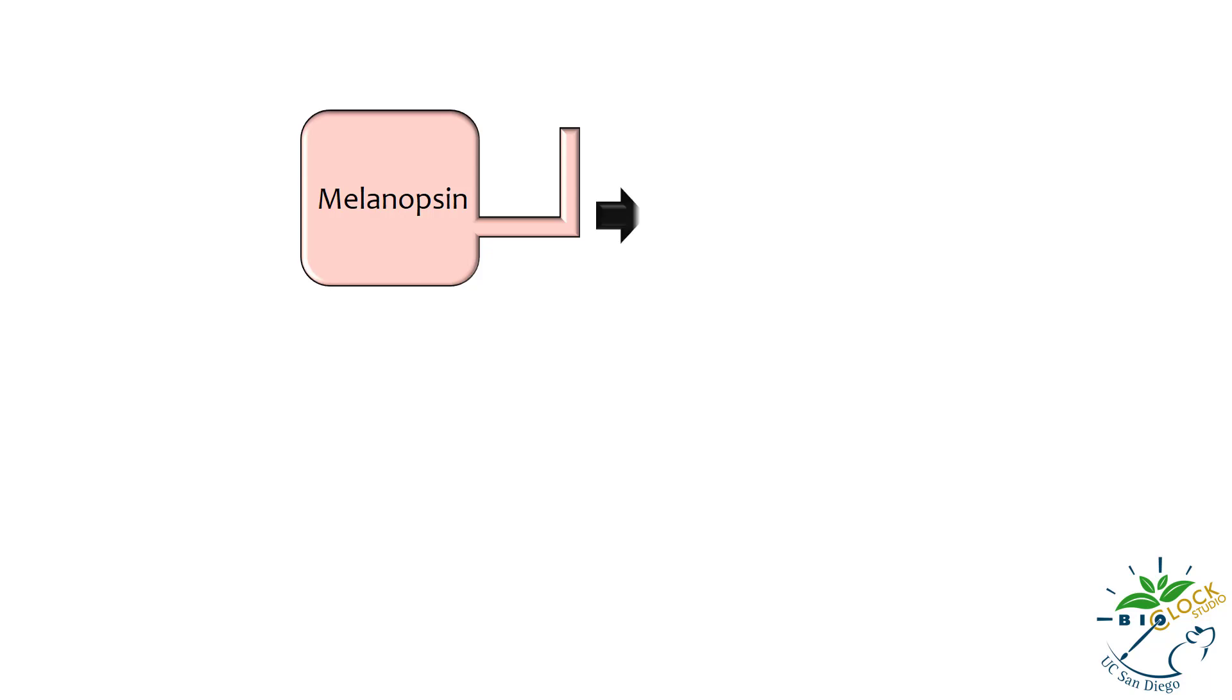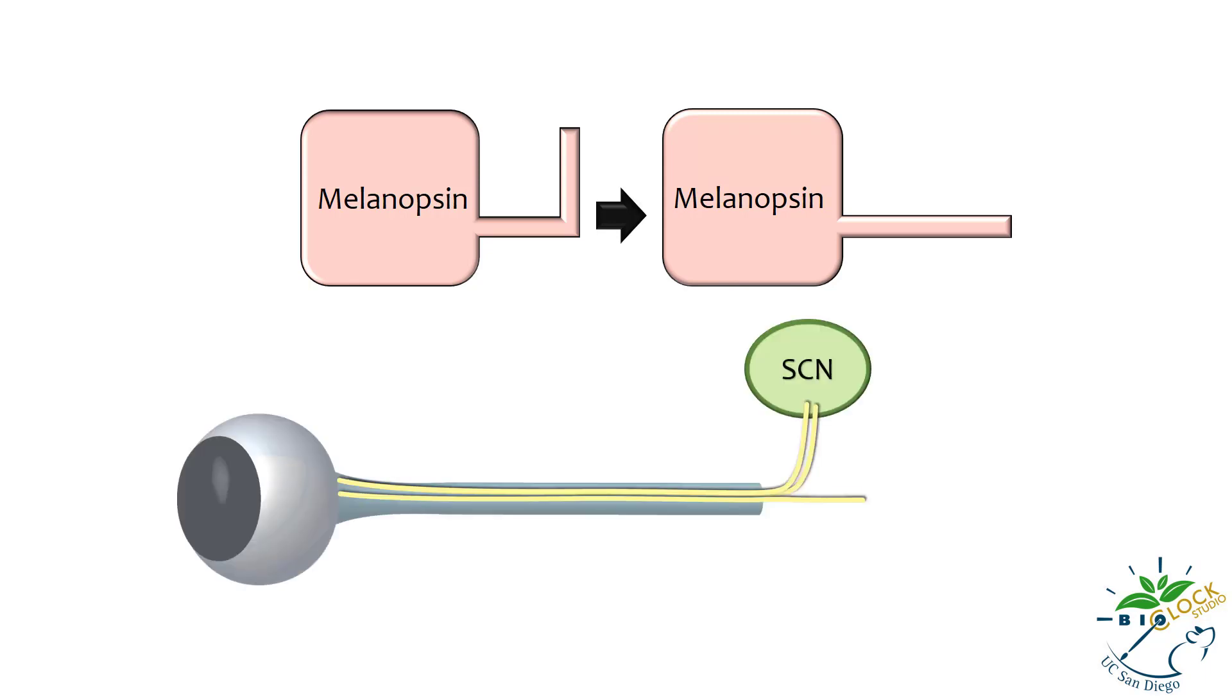When photons hit the retina, melanopsin within IPRGCs undergoes a conformational change. This change in melanopsin causes these cells to send action potentials that travel to the SCN. This anatomical pathway, consisting of an axon bundle of IPRGCs running within the optic nerve, is called the retinal hypothalamic tract, or RHT.